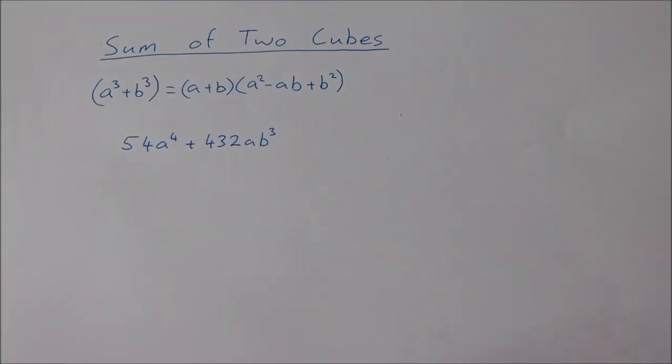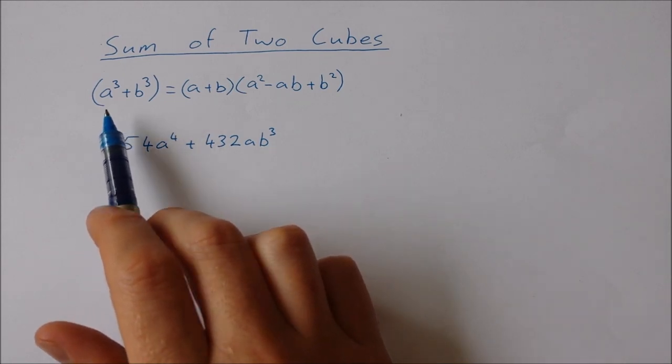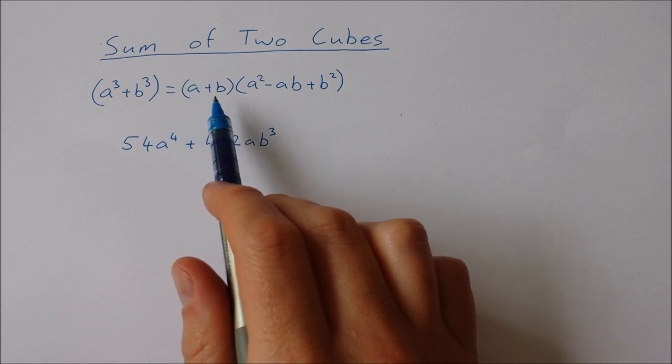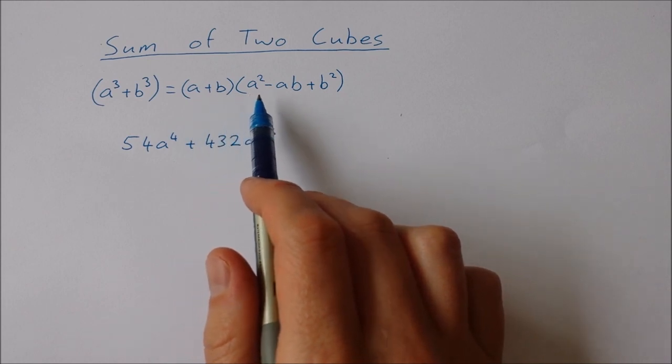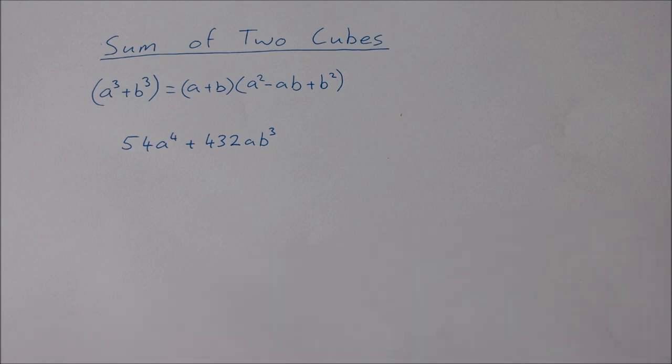Okay, so in this video we're going to take a look at a more difficult example of the sum of two cubes. Just a reminder of the formula: a³ + b³ = (a + b)(a² - ab + b²). The example that we're going to look at today is 54a⁴ + 432ab³.